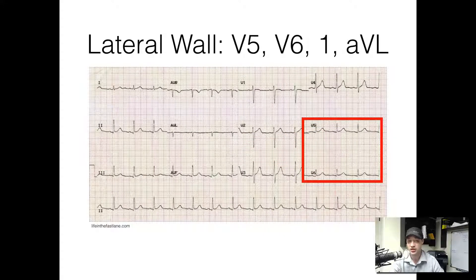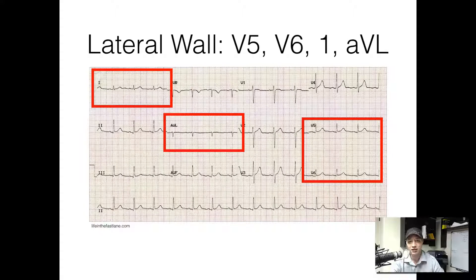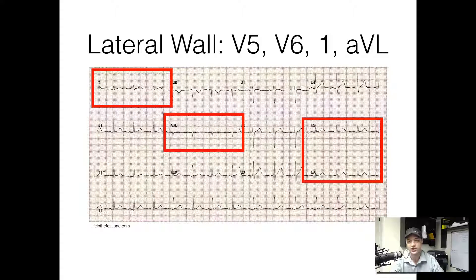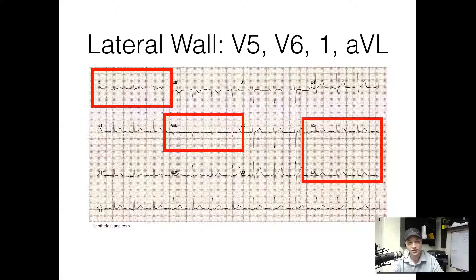Now we'll go to the other side of the EKG and we'll see leads 1 and AVL. To remember which parts of the 12-lead look at the lateral wall, keep in mind the lateral has an L in it. So we have AVL — augmented vector lateral — and lead 1, which kind of looks like a lowercase L. When looking at the precordial leads V1 through V6, try to remember the acronym SAL, or SALI: V1 and V2 are S (septal), V3 and V4 are A (anterior), V5 and V6 are L (lateral), and your inferior leads are the I — that's leads 2, 3, and AVF.